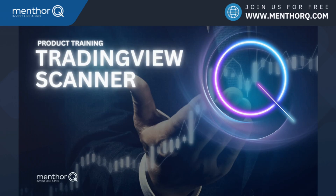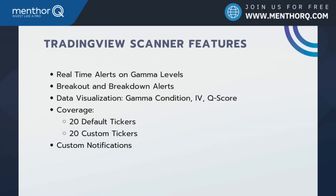Let's start with our TradingView Scanner indicator. The goal of this indicator is to alert you in real time on gamma levels — breakouts or breakdowns on different gamma levels that you set up on your chart. We're also going to add data to your TradingView chart showing the gamma conditions, so whether an asset is in positive or negative gamma, the implied volatility of the asset, and the various Q scores that help you understand sentiment during the day.